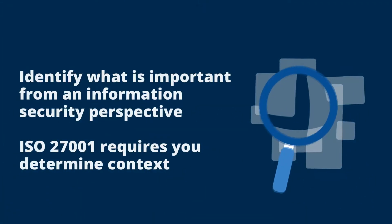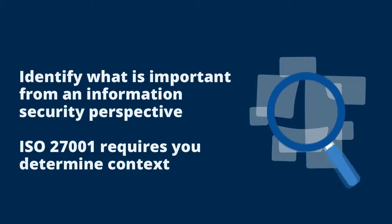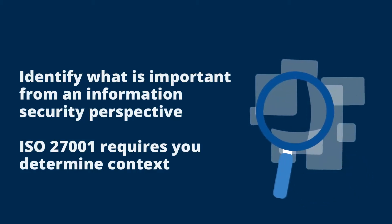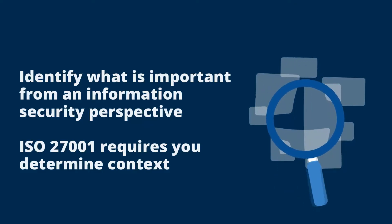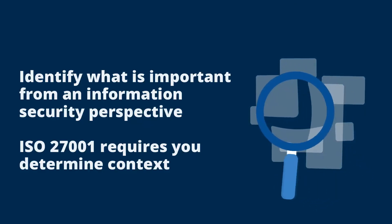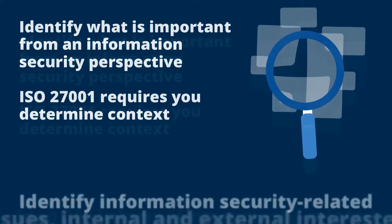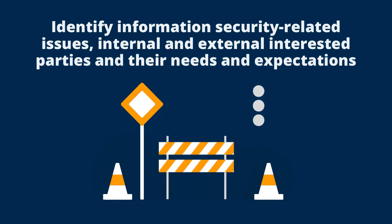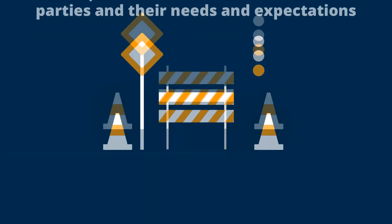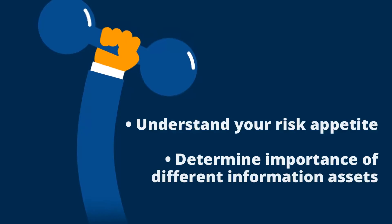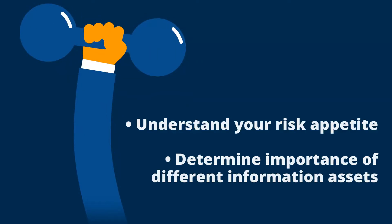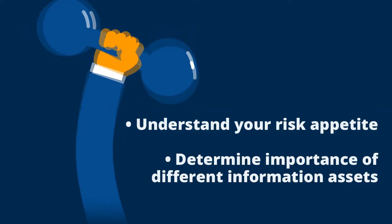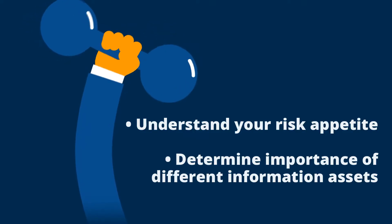The first stage of your risk management methodology needs to identify what is important to you or your organization from an information security point of view. ISO 27001 requires you to determine the context of your organization, part of which means that you need to be able to identify the information security related issues that you face, along with who the internal and external interested parties are and what their needs and expectations are. It is important to also understand what your risk appetite is at this stage.